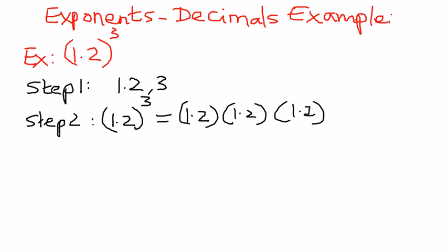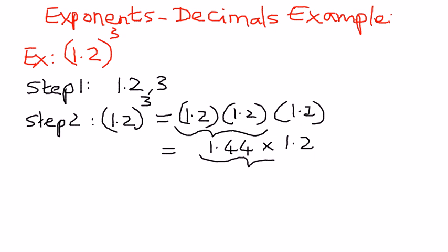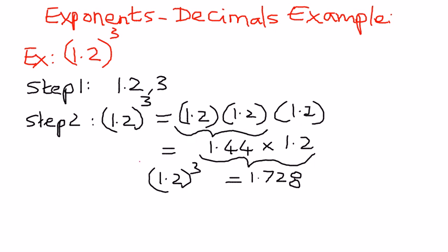We're going to take two numbers at a time and simplify the math. 1.2 times 1.2 is equal to 1.44. And we're going to take that and multiply by 1.2. So 1.44 times 1.2 is equal to 1.728. Therefore, 1.2 raised to the power of 3 is equal to 1.728.